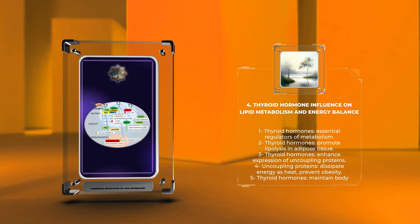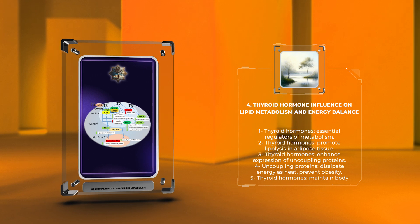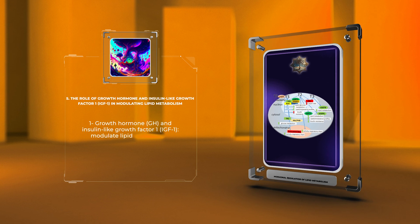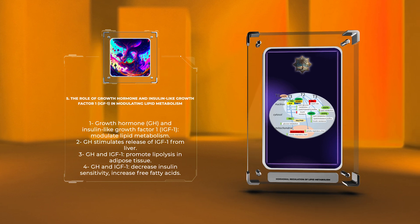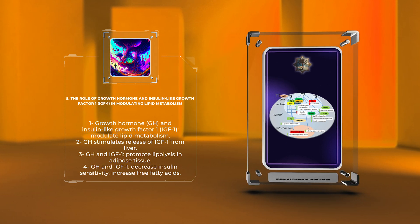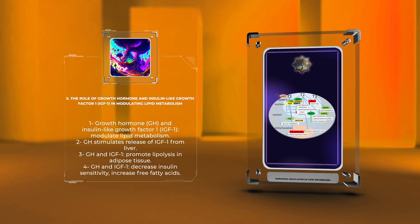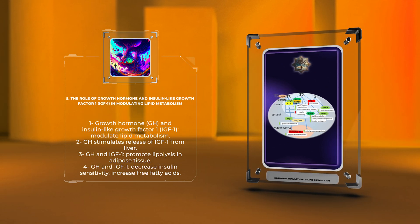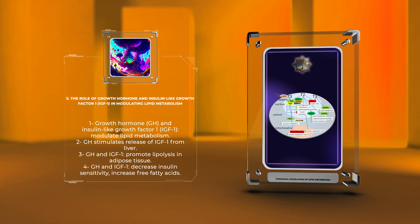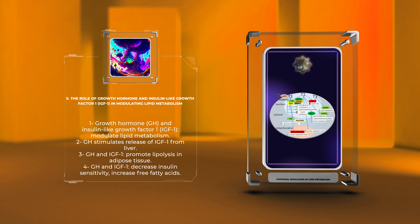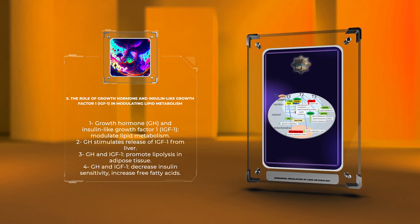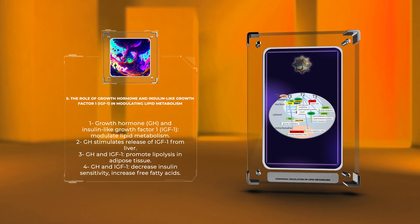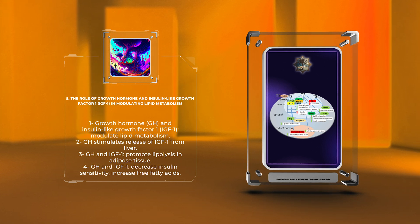The role of growth hormone and insulin-like growth factor 1, IGF-1, in modulating lipid metabolism. Let's now discuss the role of growth hormone, GH, and insulin-like growth factor 1, IGF-1, in modulating lipid metabolism. GH, produced by the pituitary gland, stimulates the release of IGF-1 from the liver. Together, GH and IGF-1 promote lipolysis in adipose tissue by activating hormone-sensitive lipase. Additionally, GH and IGF-1 enhance lipolysis indirectly by decreasing insulin sensitivity, which leads to increased levels of free fatty acids in the blood. These released fatty acids serve as an energy source for various tissues during periods of fasting or increased energy demands.